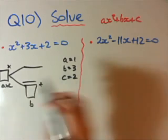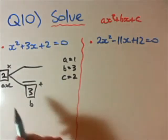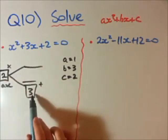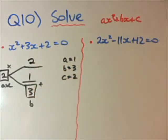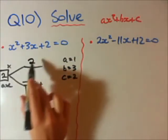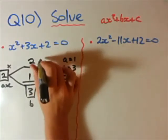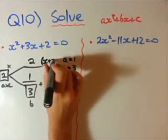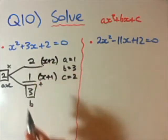So, a times c is 1 times 2, so it's just 2. And, b is 3. So, the Fox family method requires us to get 2 numbers here and here that multiply to give 2 but add to give 3. Well, this is a pretty easy one. Because, 2 and 1. 2 times 1 equals 2. But, 2 plus 1 equals 3. So, from that, we can go, because our pronumeral is x, we go x plus 2, x plus 1. All we're doing is substituting our answers in.